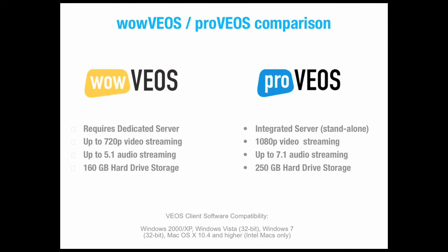There are two products in the Vios range that offer the same features with the following distinctions. While Vios requires a dedicated server and is intended for enterprise level installations where a large number of units need to be installed and centrally managed, ProVios is a standalone unit with the server component built in. It has a higher speed processor and much more robust I/O capabilities, and is designed for applications where multiple units are not required.